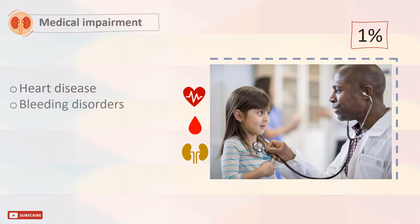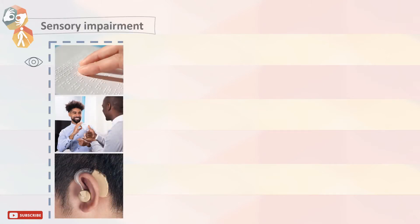Medical impairment: 1% of children have heart disease, bleeding disorders, diabetes, or kidney disease. Sensory impairment includes blindness, being mute, or deafness. Many patients have more than one type of impairment.